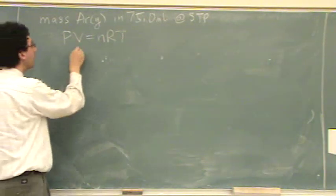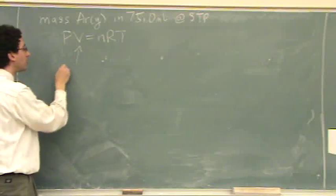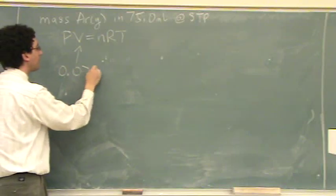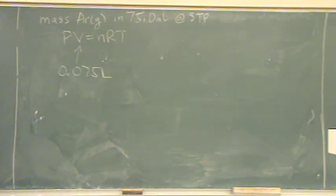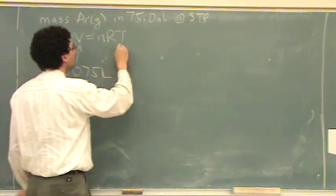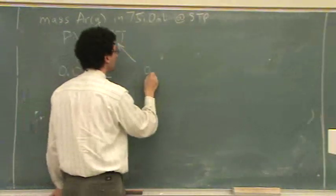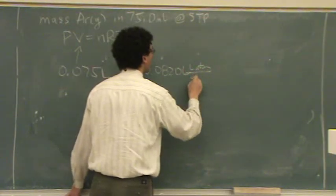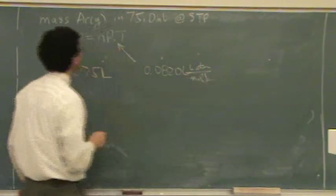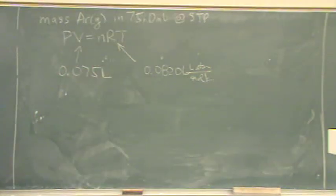Let's see what we have. We have volume, that's 75 milliliters, or 0.075 liters. When you're using ideal gas law, you want the volume in liters. R, we got that one, 0.08206 liters atmospheres per mole Kelvin.